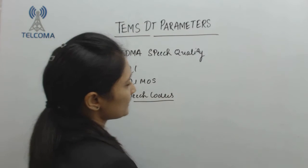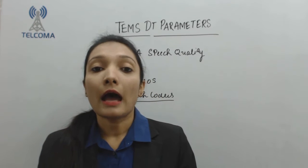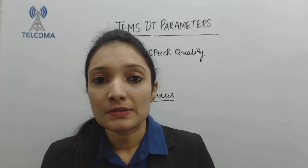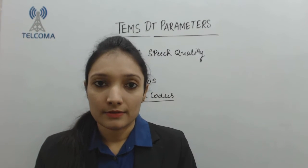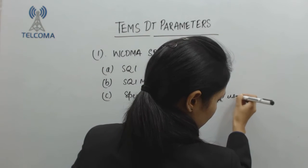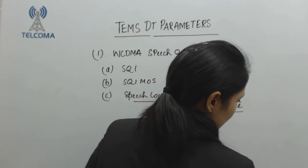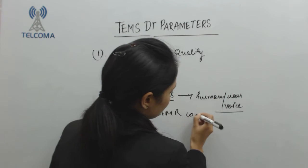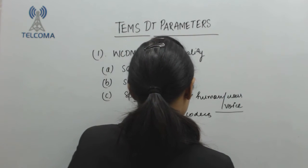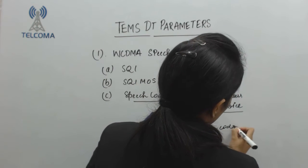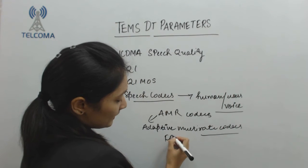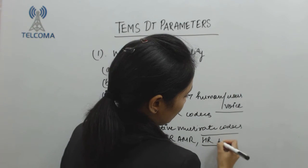We also have the air speech codecs, where we can check what kinds of codecs are being used for the downlink channel. A codec is used to convert a digital signal into voice or voice into digital. Speech codecs are designed for human voice. We have the AMR codec — adaptive multi-rate codec — and the different configurations can be seen in the TEMS investigation tool, which also specifies their mode.